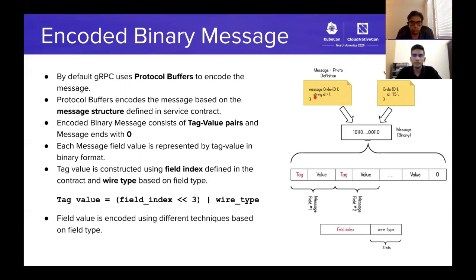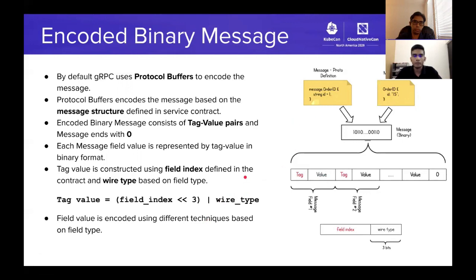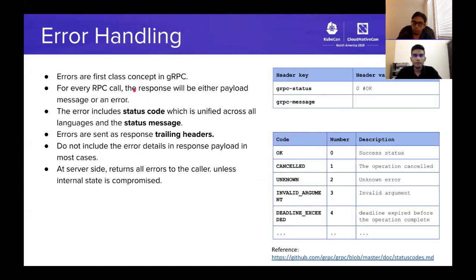For a string type field, the wire type is length-delimited (value 2). The value is encoded using UTF-8 encoding. For integers, varint encoding is used depending on the type. This covers how gRPC encodes binary messages using protocol buffers.